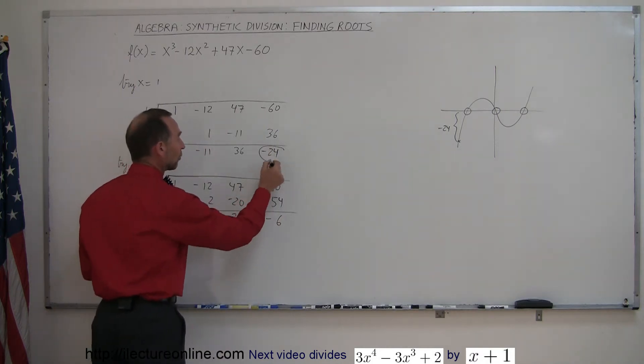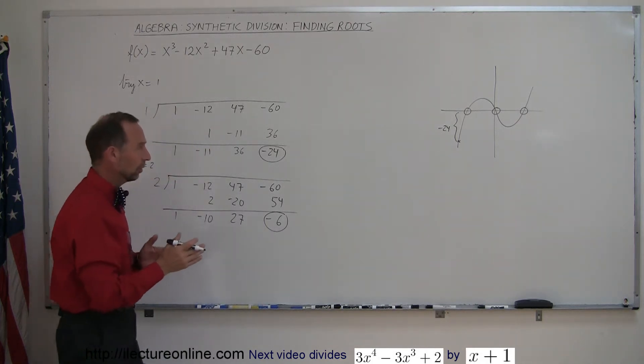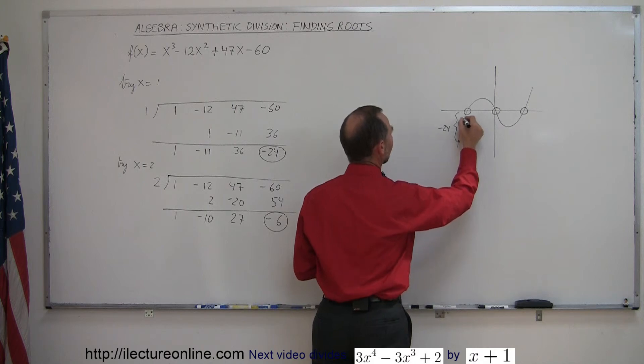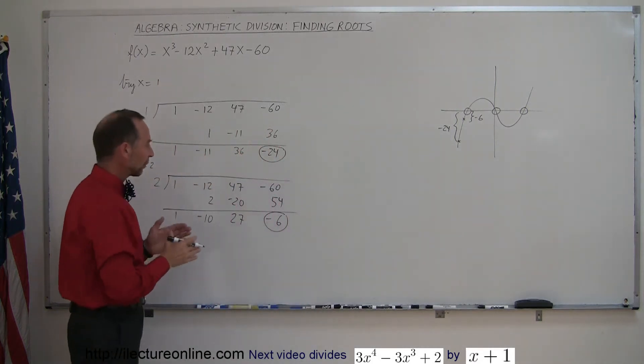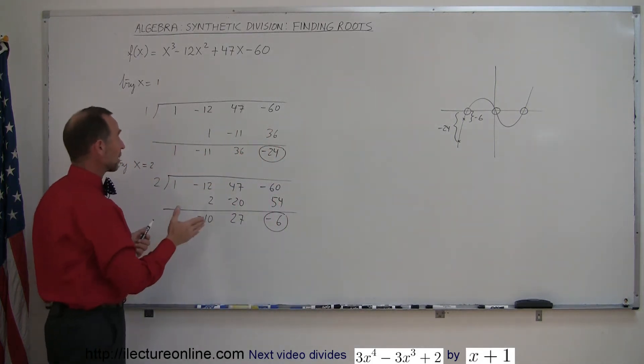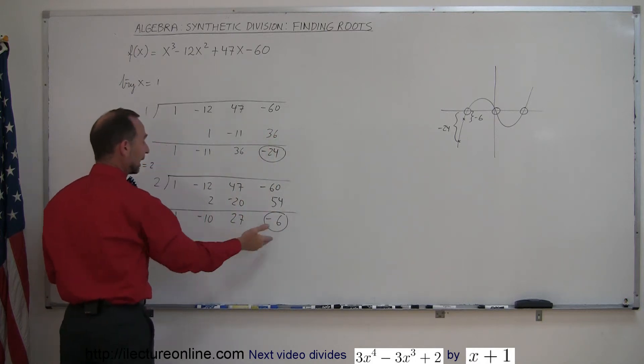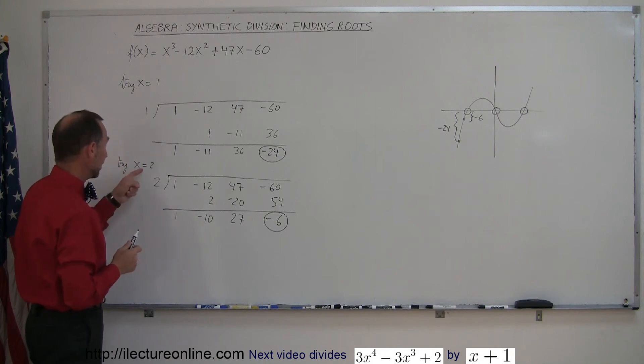Now notice, we had a minus 24 here as a remainder, now we have a minus 6, which means we're getting closer to the 0. Which means we're now plugging a different value for x and we get a value that is now much closer to the presumed root. So it looks like we're going in the right direction. What we're trying to do is get a remainder of 0. If I plug in a different number and I get closer to 0, that means I'm going in the right direction. Which means maybe the next attempt, x equals 3, may just do it for us.